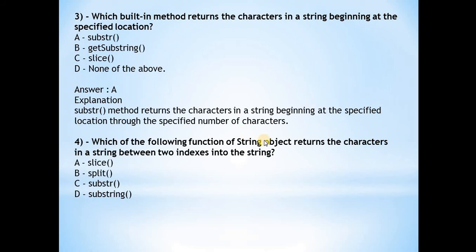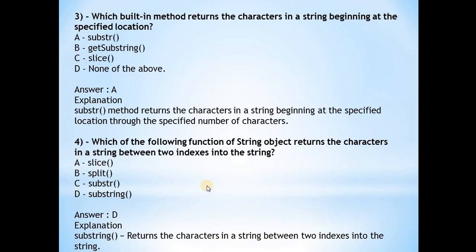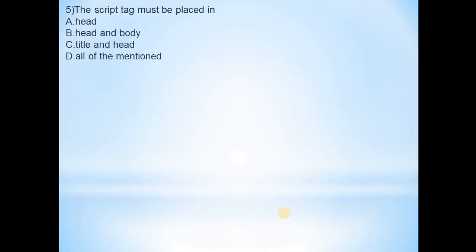The fourth question is: which of the following functions of the string object returns the characters in a string between two indexes into the string? The answer is D, substring. Substring returns the characters in a string between two indexes, while the other method returns characters beginning at a specified location.